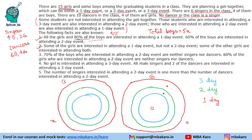All male singers and two of the dancers are interested in attending the three-day event. There are four male singers, and since no girl attends a three-day event, the two dancers placed here are male. So four boy singers and two boy dancers fill the three-day event region. We are left with four boy dancers, two girl dancers, and four girl dancers to place.